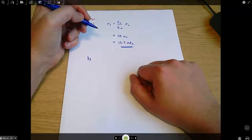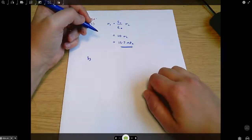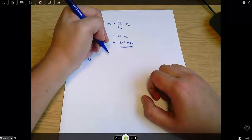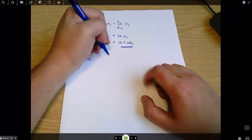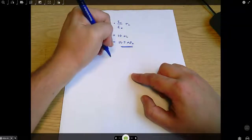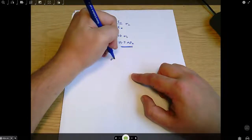So for that, we want to work out the strain. We can use either the concrete or the steel for this calculation. The strain should be the same. So since I've got the steel information here, I'll use the steel.